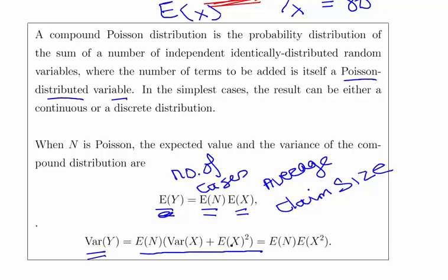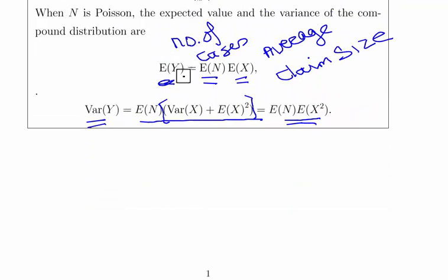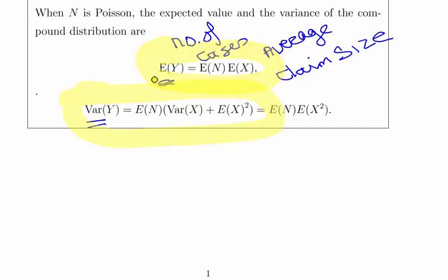The variance is a little trickier. The variance formula is: the expected value of N times the variance of X, plus the expected value of N times the expected value of X squared. That is the standard definition for the compound Poisson distribution variance. You can also express it as the expected value of N times the expected value of X squared — but we won't use that form here.